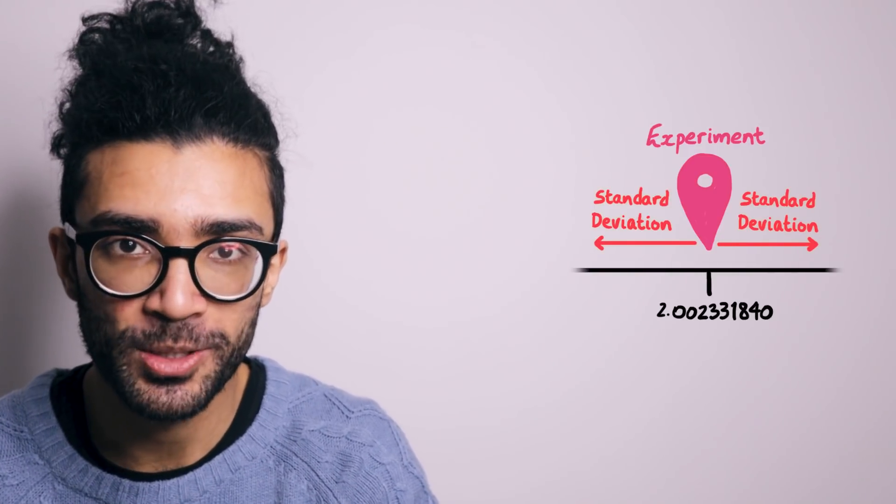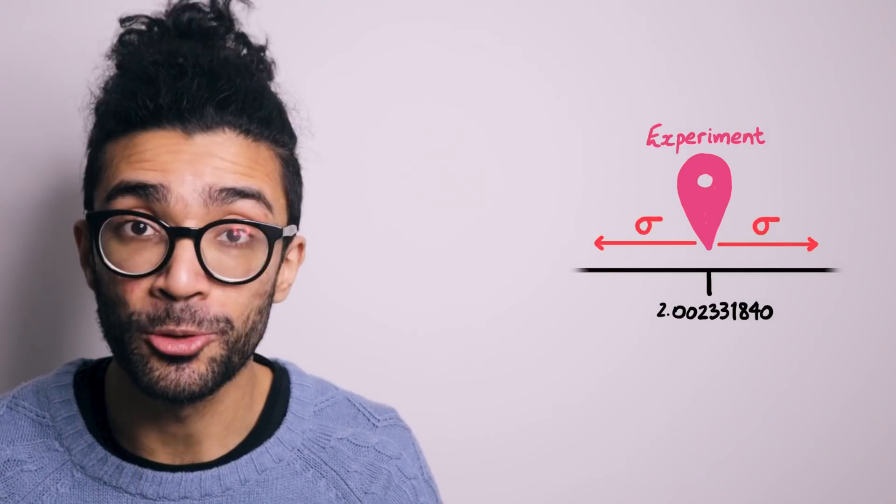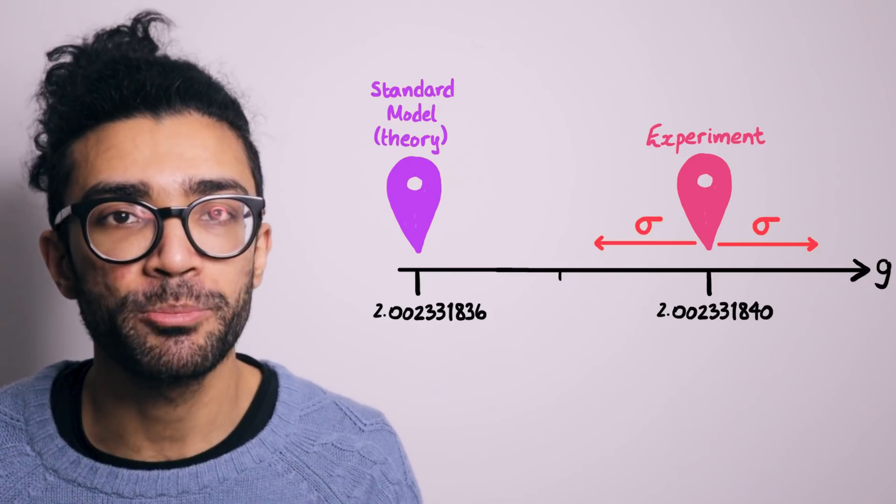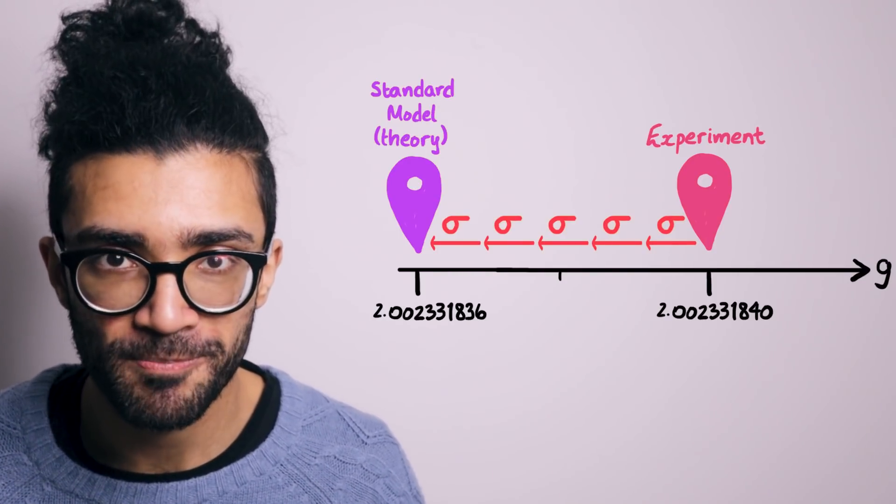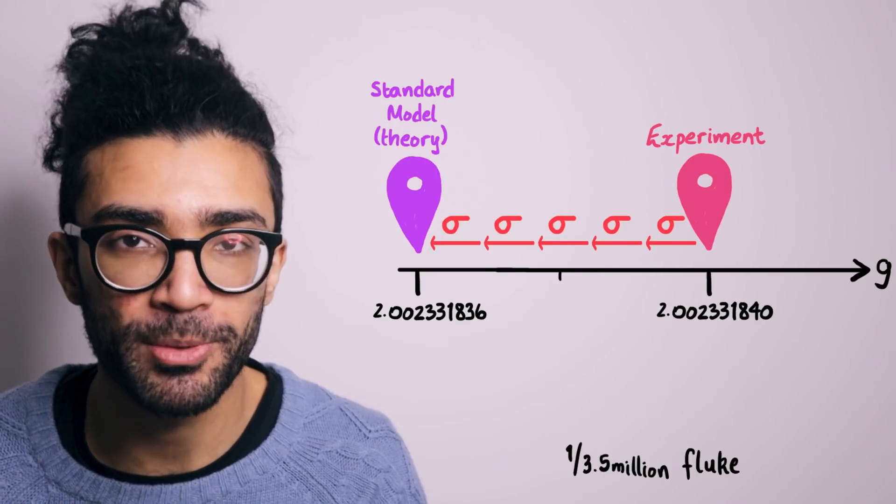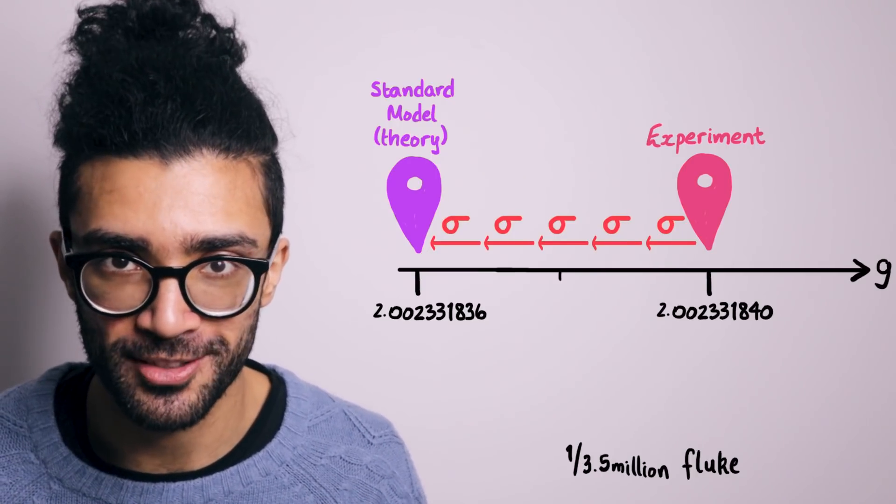And a standard deviation is labeled with the Greek letter sigma. In order for scientists to claim that they have discovered something new, some new science perhaps, the general convention is that the theoretical prediction and the experimentally measured value have to be five sigma apart.